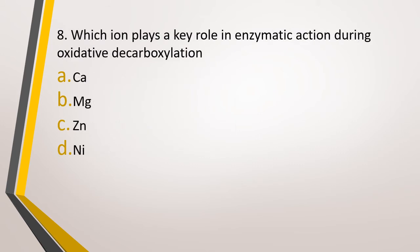Question number 8. Which ion plays a key role in enzymatic action during oxidative decarboxylation? Option A: Calcium. Option B: Magnesium. Option C: Zinc. Option D: Nickel. The correct answer is Option B — magnesium ion.